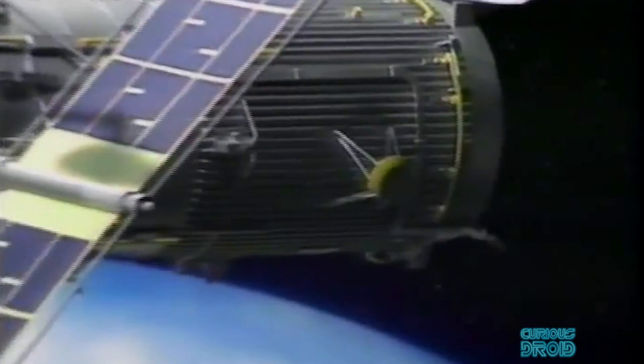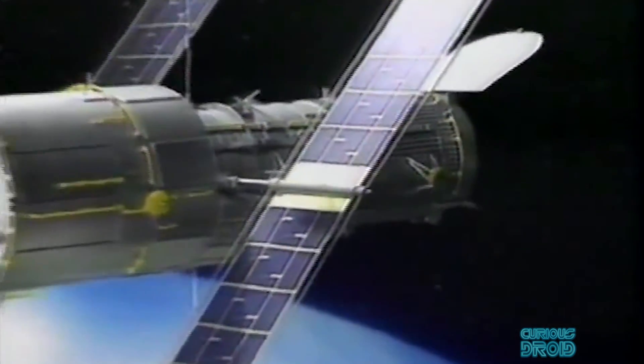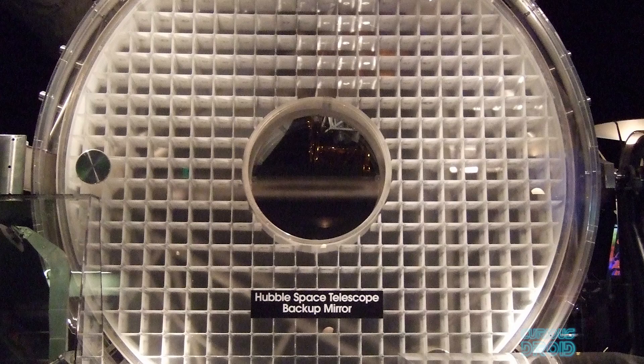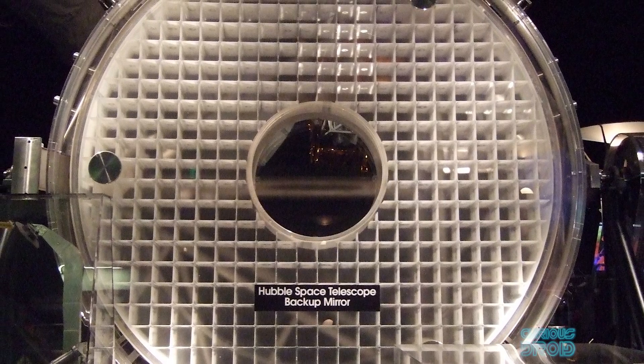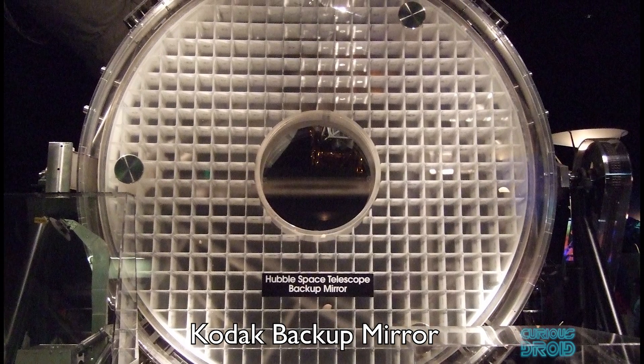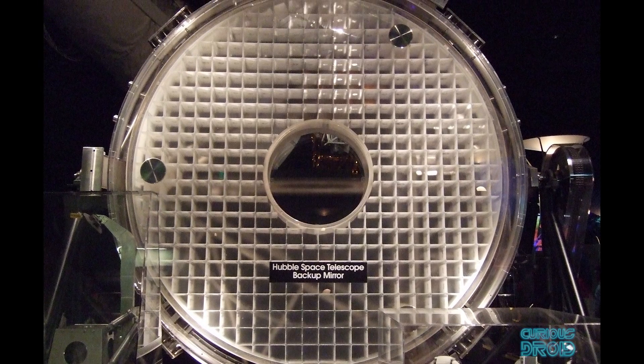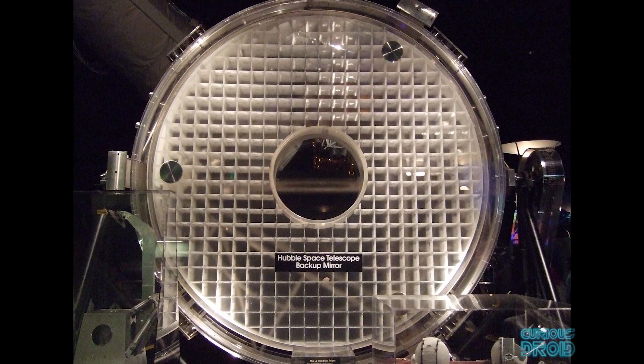A decade later, the one and a half billion dollar space telescope was high above the Earth with a flawed mirror. There was a perfect backup mirror that had been made by Kodak, but it would have been impossible to replace the mirror once in orbit and too time-consuming and expensive to bring the Hubble back to Earth for refitting.